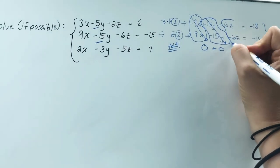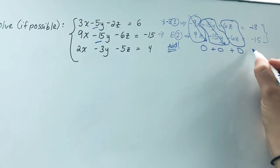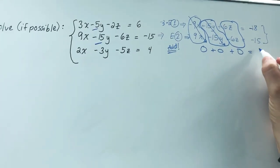And we had intended for z to cancel, but that's also unintended, but fine. So we end up with 0 equaling negative 33.